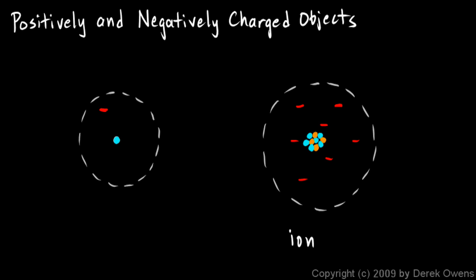And an atom gains a charge like that by either gaining or losing electrons. Now it's important to understand that the atom does not gain or lose protons. The protons are stuck down there in the nucleus, and they're fastened into the nucleus very, very tightly by the strong nuclear force.